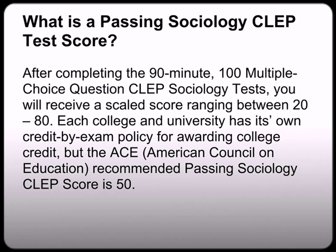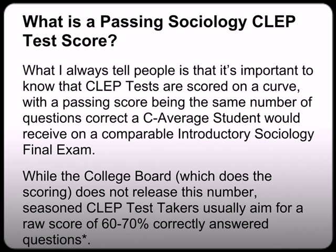What is a passing Sociology CLEP test score? After completing the 90-minute, 100 multiple-choice question CLEP Sociology test, you will receive a scaled score ranging between 20 and 80. Each college has its own credit-by-exam policy for awarding college credit, but the ACE recommended passing score is 50. CLEP tests are scored on a curve, with the passing score being the same number of questions correct a C-average student would receive on a comparable introductory Sociology final exam. Test takers usually aim for a raw score of 60 to 70% correctly answered.